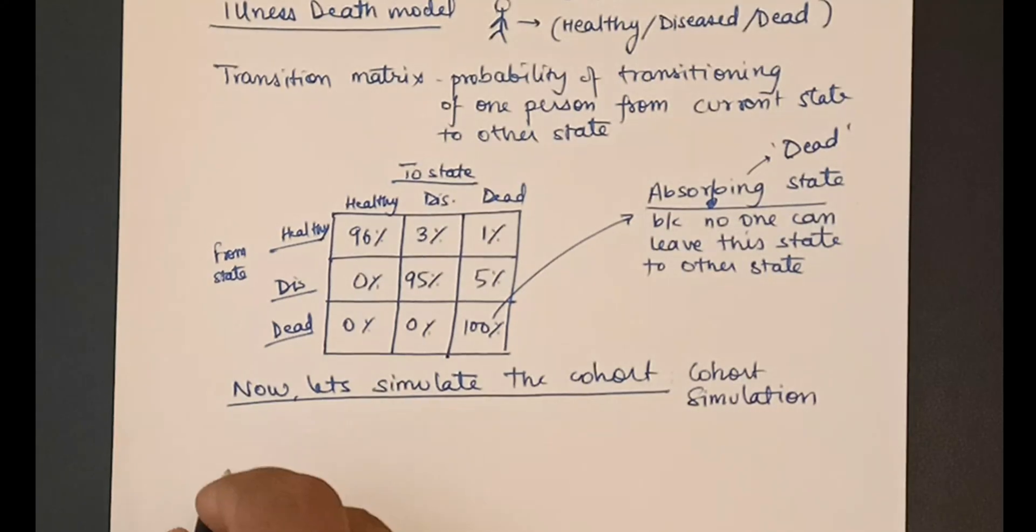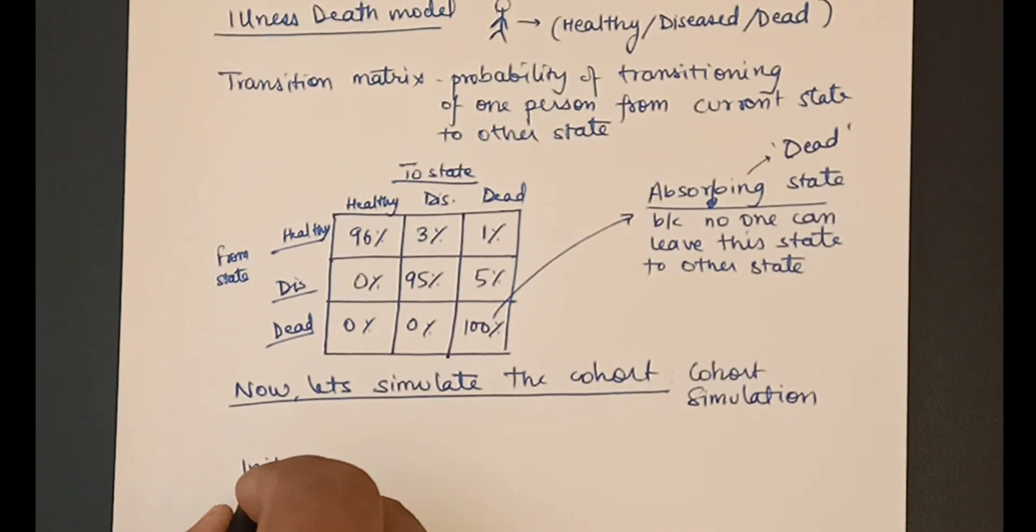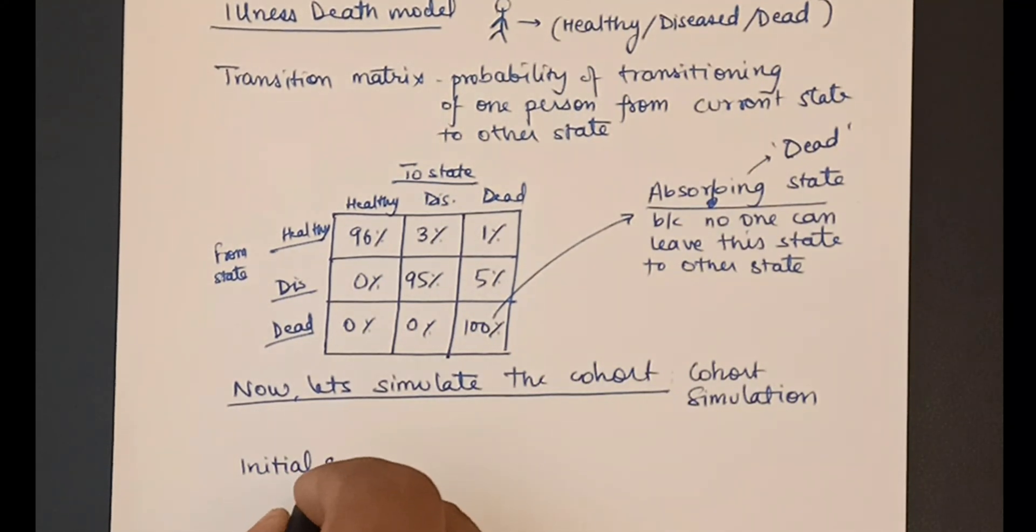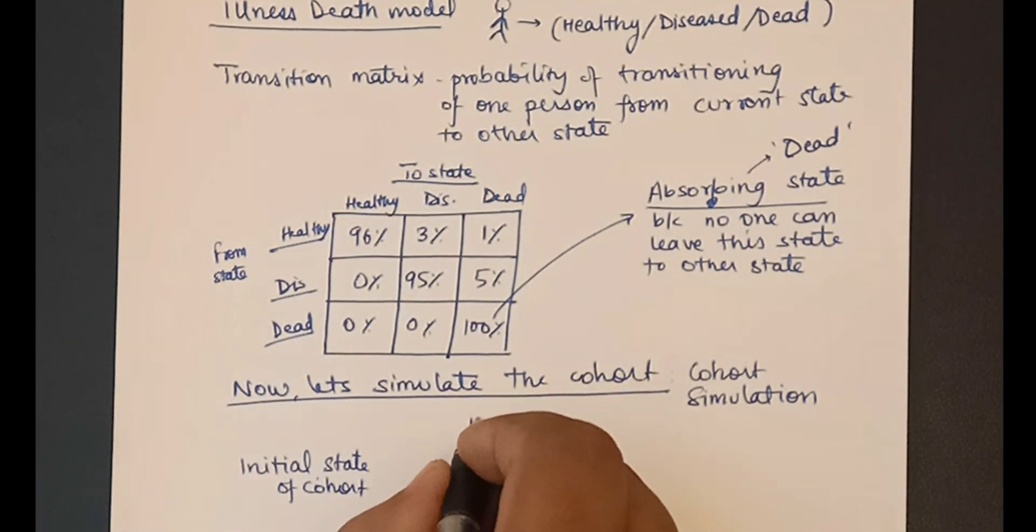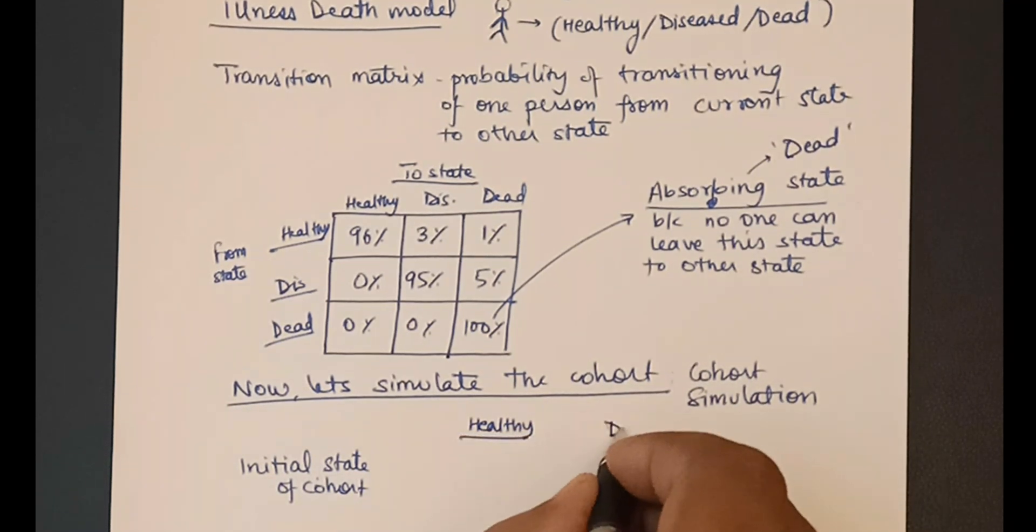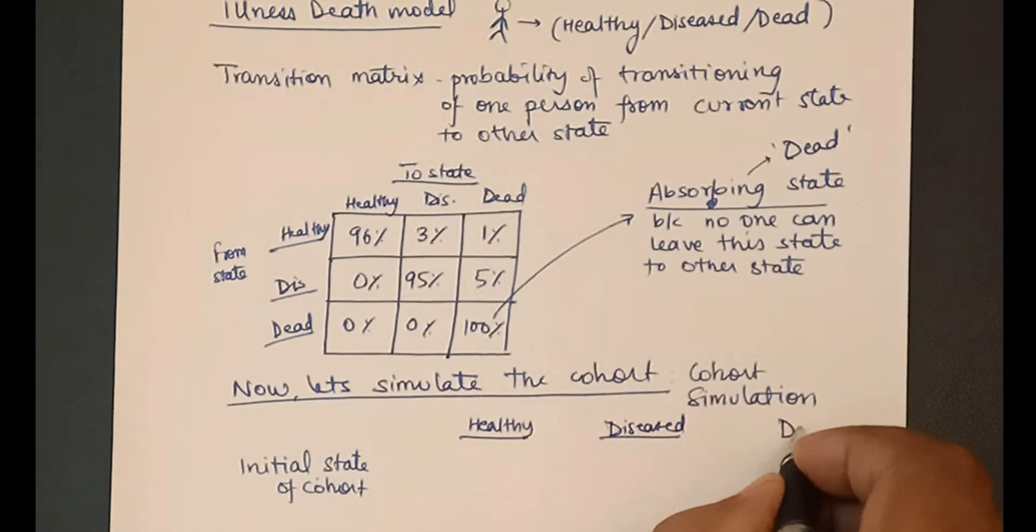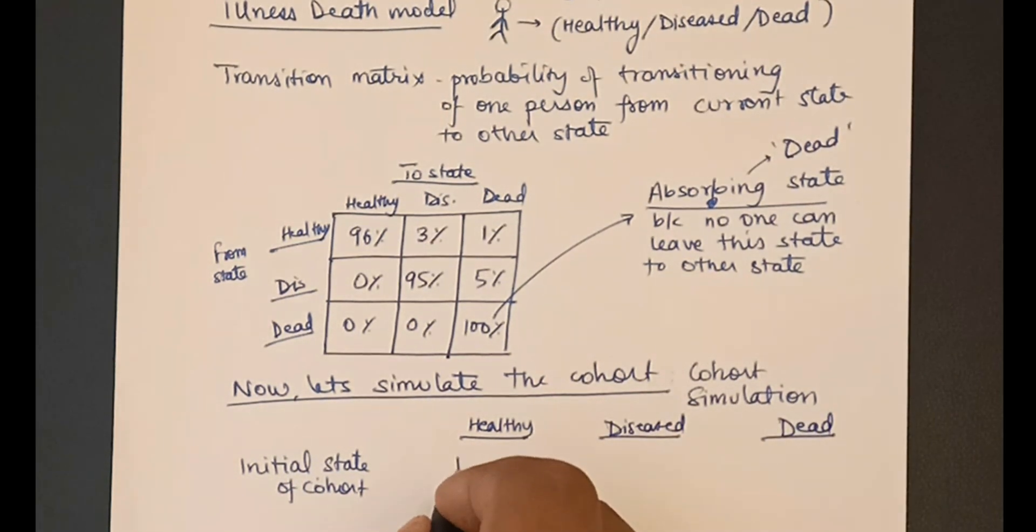Once we understand that, let us see how we can simulate a cohort. Cohort simulation is nothing but observing how a bunch of people, also known as cohort, will move from one state to the other as time progresses. For example, let us start with 1000 healthy people. Our initial state of the cohort is 1000, 0, and 0: 1000 healthy, 0 diseased, and 0 dead.